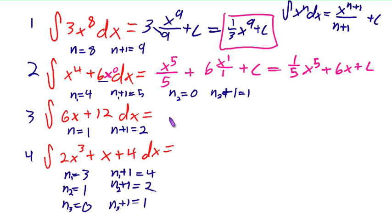Going to problem 3 here, it's going to be relatively the same story. We're going to pull our 6 in front of the x to the 1, which becomes x to the 2 over 2 plus 12x to the 1 over 1 plus c. And that will simplify to 3x squared plus 12x plus c.